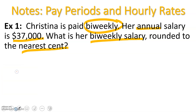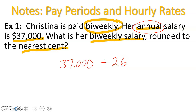We know that Christina makes $37,000 every single year. Since she gets paid bi-weekly — every other week — and there are 52 weeks in a year, she gets paid 26 times during the year. So let's take her annual pay and divide it by the 26 paychecks she will receive.